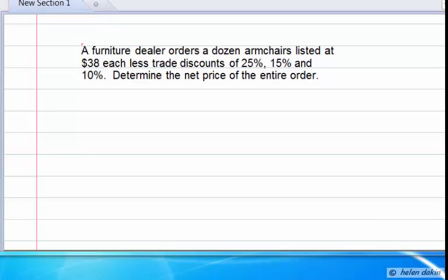A furniture dealer orders a dozen armchairs listed at $38 each, less trade discounts of 25%, 15%, and 10%. We'd like to determine the net price of the entire order.